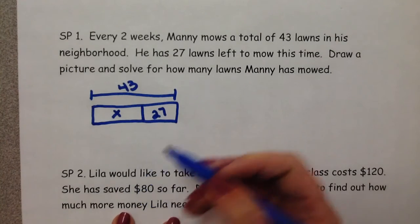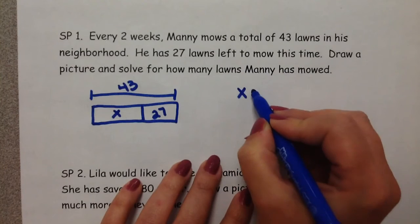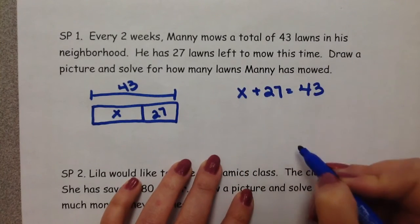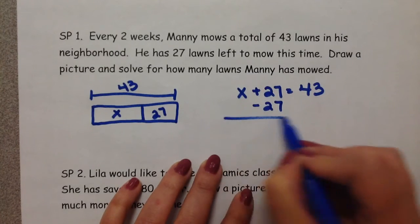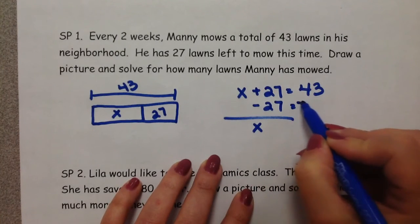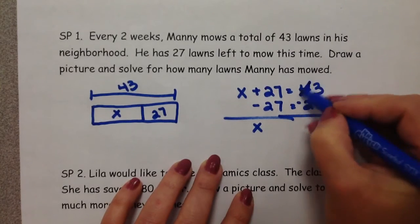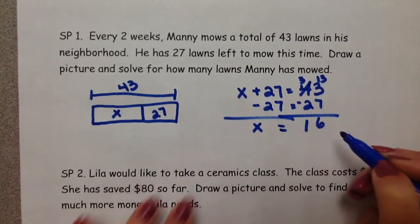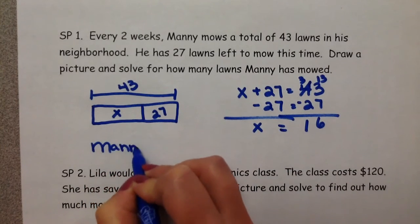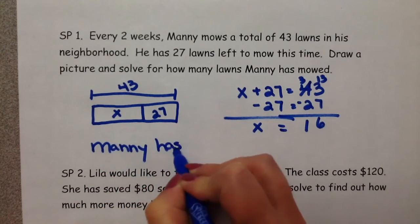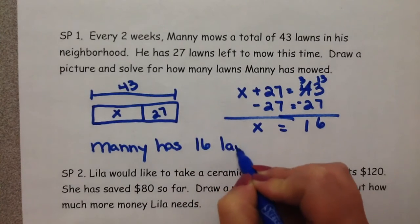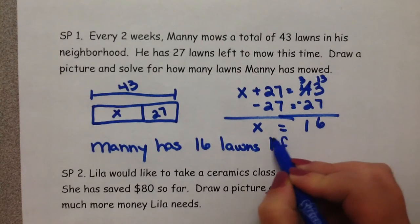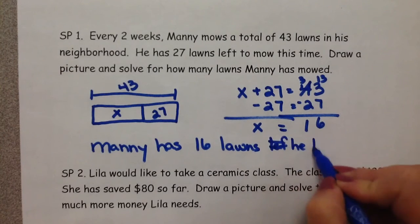Now, we could turn this into an equation, which could look like this: x plus 27 is equal to 43. Follow through on getting the variable by itself. So, you could say Manny has 16 lawns he has already mowed.